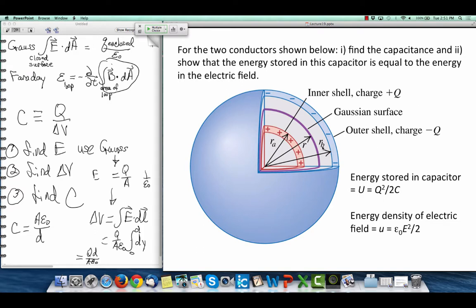How do I find the capacitance of this? The same thing. Capacitance is q over delta v. The charge on the inner sphere is plus q. The charge on the outer sphere is minus q. So that's the q.